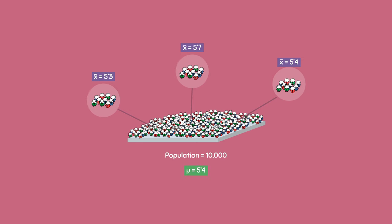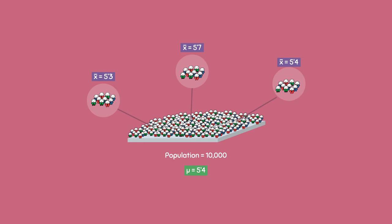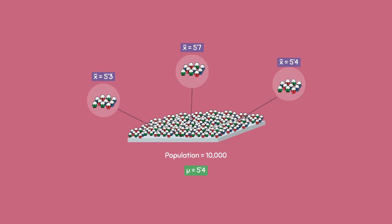This is because samples are relatively smaller in size, and because of that they have more variability, contain less information, and don't always accurately represent the population.